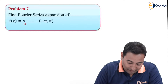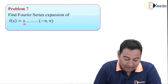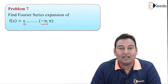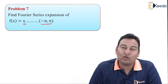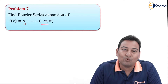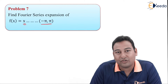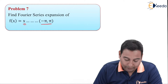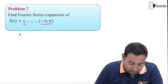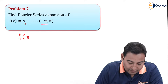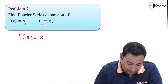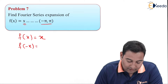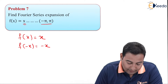Let's start solving it. First of all, as soon as you get interval minus pi to pi, the first thing that should come in your mind is whether it is an even function or an odd function. Let's check for that. f of x equal to x — what's the trick? Replace x with minus x. Therefore f of minus x is equal to minus x.